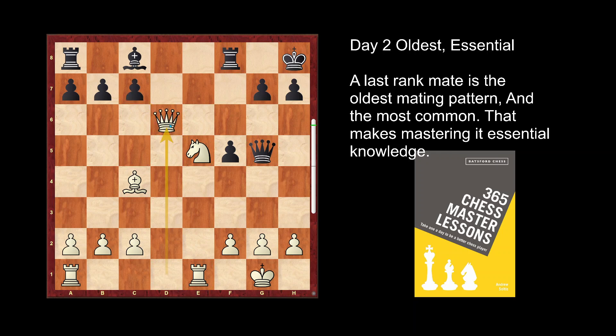He actually just tries to grab a pawn back. In the game continuation he does this, we take back, and he resigned. Because he's down a piece and cannot hold. I have this check, this check, this take — I get the pawn back, then I double the rooks on the open file. He's not developing and he's down a piece.